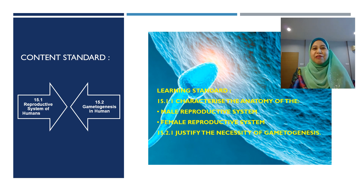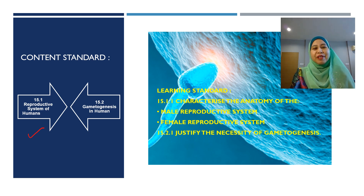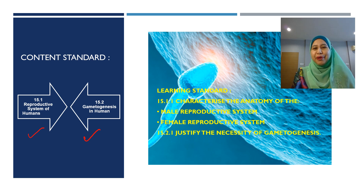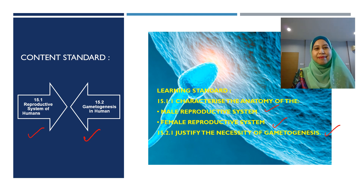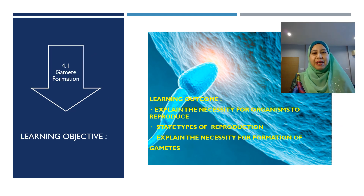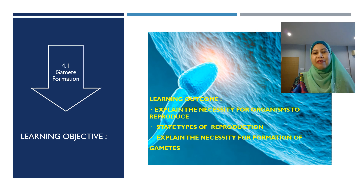For the Content Standard for Form 4 KSSM, it is under 15.1, Reproductive System of Humans, and 15.2, Gametogenesis in Humans. The Learning Standards are 15.1.1, Characterize the Anatomy of the Male and Female Reproductive System, and 15.2.1, Justify the Necessity of Gametogenesis. For KBSM Form 5, the Learning Objective is under 4.1, Gamete Formation. The Learning Outcomes are: explain the necessity for organisms to reproduce, state types of reproduction, and explain the necessity for formation of gametes.